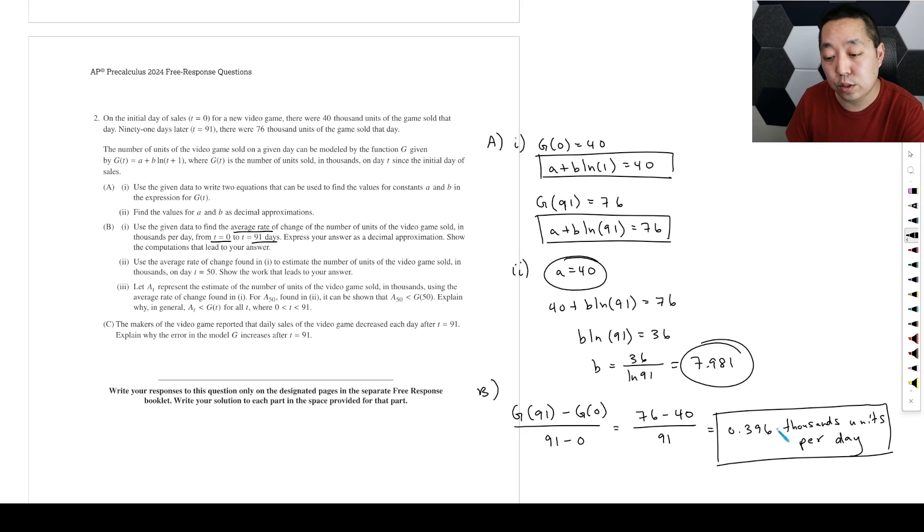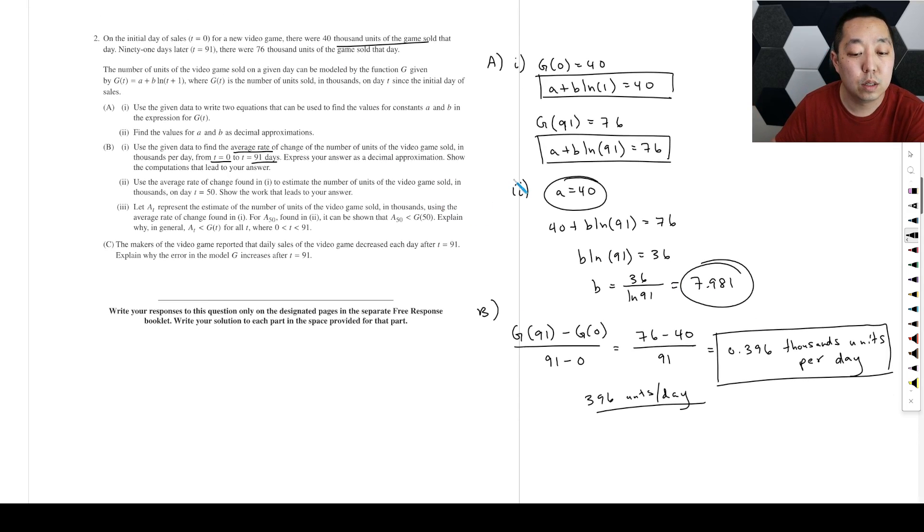So you can also, if you don't want to write as thousands, this would be perfectly acceptable in terms of dimensionally. You could say it's 396 units per day. That would also be fine. But I just left it in thousands of units because that's the units that they were using here.